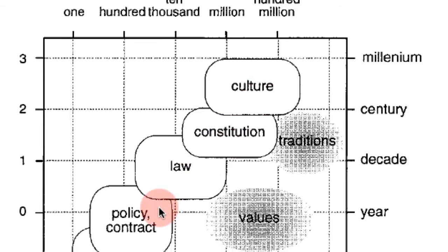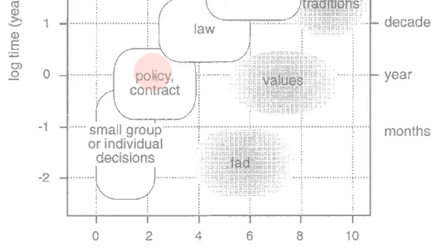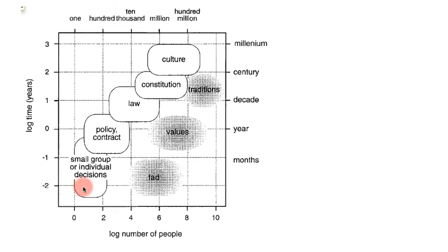Notice that the laws, contracts, and policies exist for smaller groups of people and for a smaller length of time. At the smallest level are individual or group decisions.